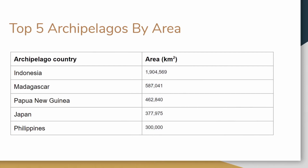We're going to do a fun facts section — the top five archipelagos by area. The first country is Indonesia, with 1,904,569 square kilometers. The second is Madagascar, with 587,041 square kilometers. Indonesia is more than twice the size of Madagascar, which is crazy to think about. The third country is Papua New Guinea, with 462,840 square kilometers. You can pause your video and read it over if you want.